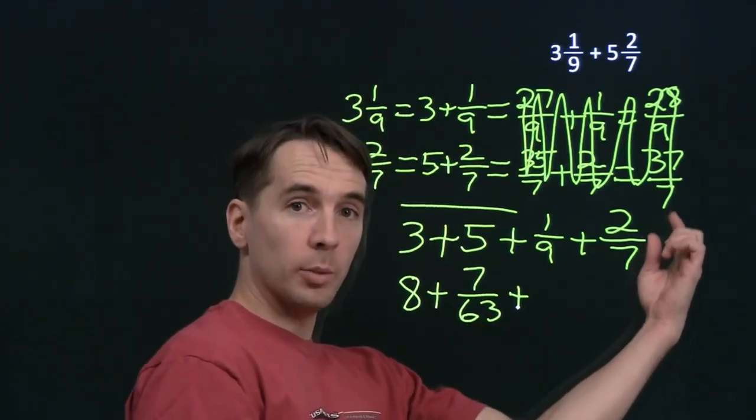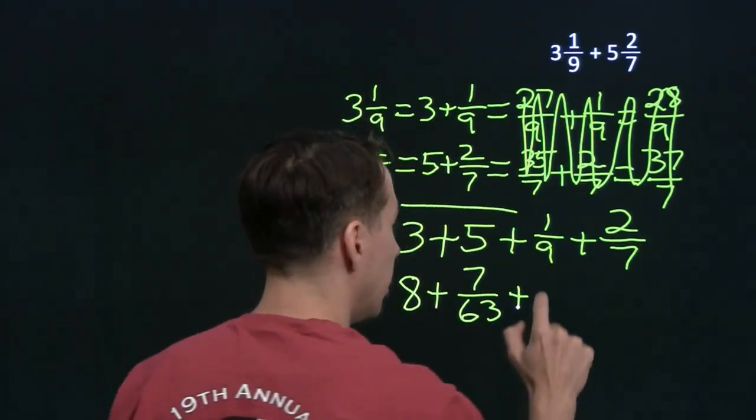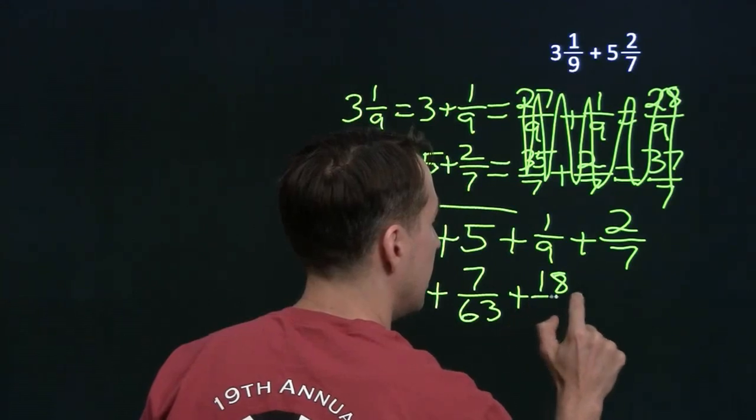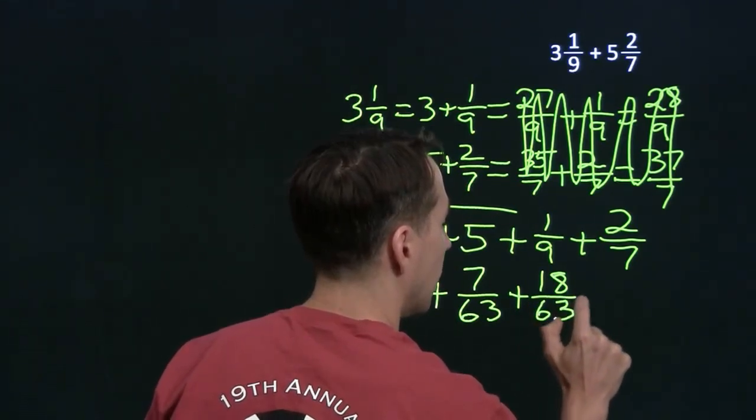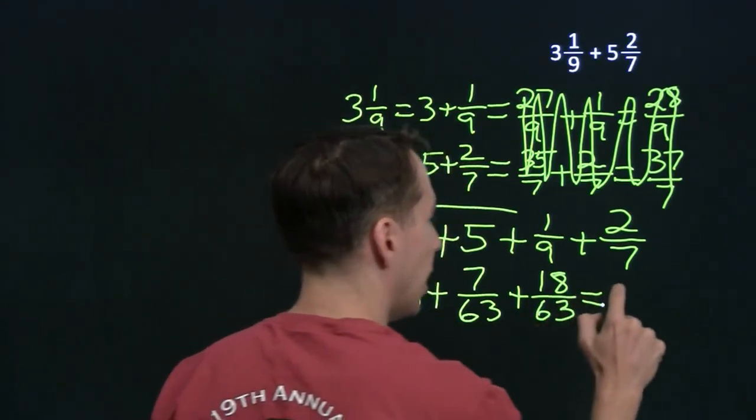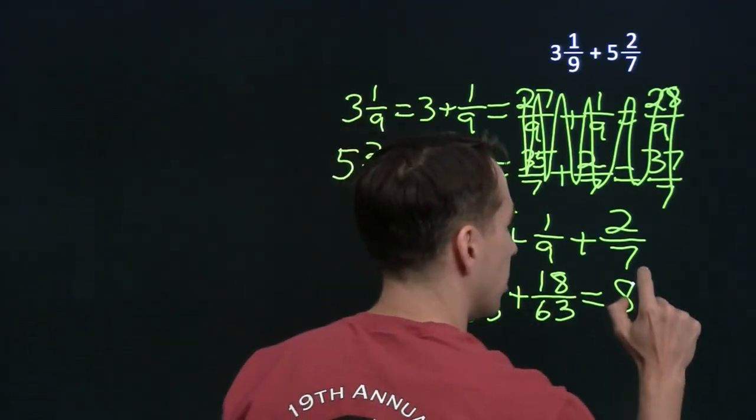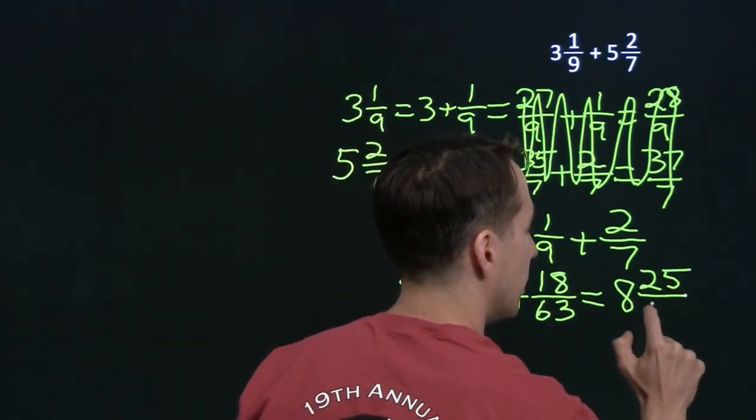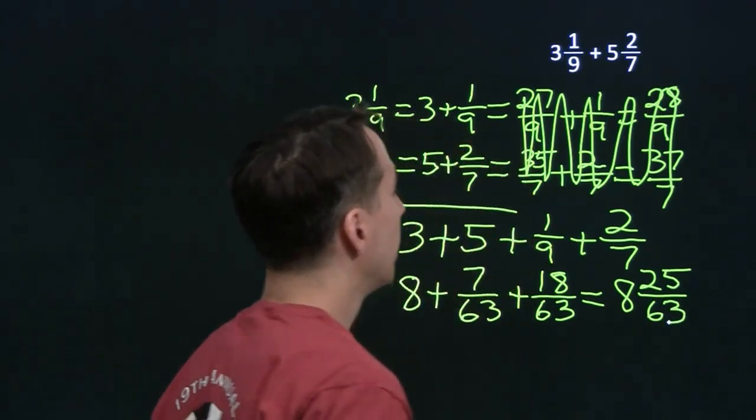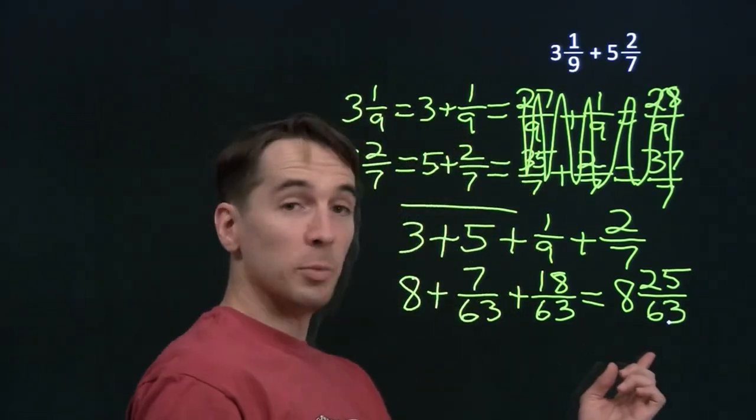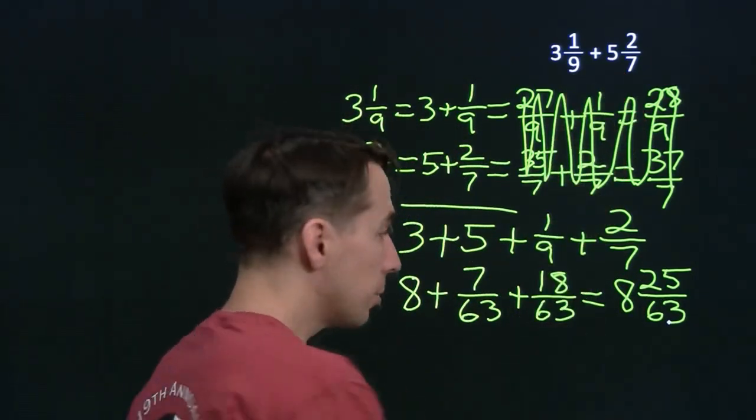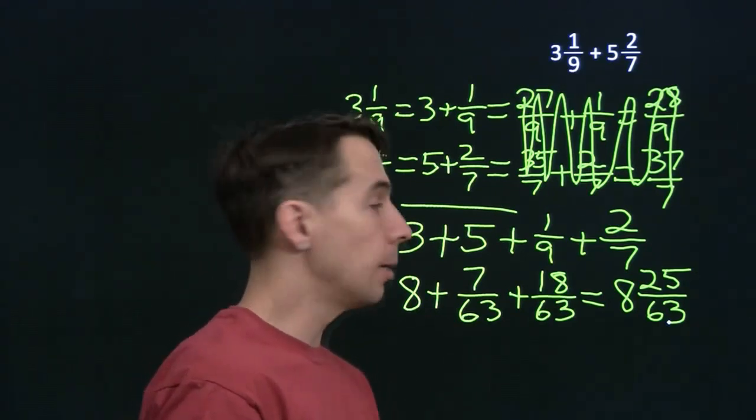And then the 2 sevenths, we're going to multiply the top and bottom of that by 9, and that'll give us 18 over 63. And when we add these all up, we still have our 8. 7 sixty-thirds plus 18 sixty-thirds gives us 25 sixty-thirds. And notice that we write our final answer here as a mixed number. The problem is written in terms of mixed numbers, final answer in terms of a mixed number.